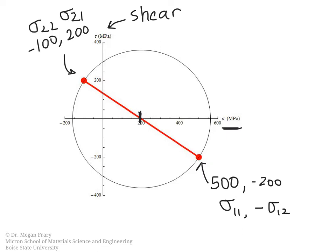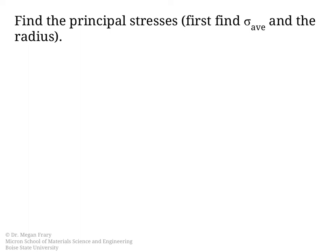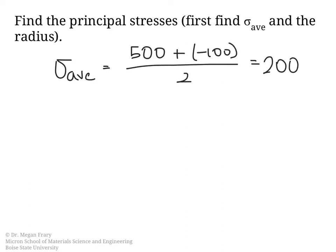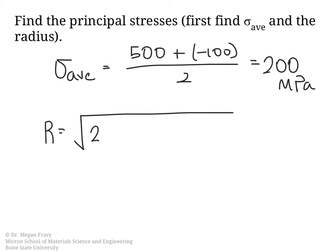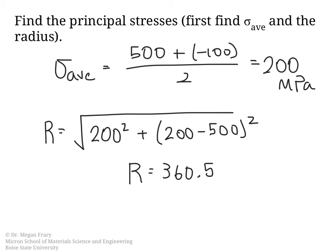Let's look mathematically at how we find the center point — sigma average — and the radius of the circle, because that gives us the maximum shear stress and the principal stresses. The average stress is the sum of those two normal stresses divided by 2, which gives us 200 MPa. We find the radius using the formula: the square root of the shear stress squared plus the difference between sigma 11 and sigma average squared, giving a value of 360.55 MPa.